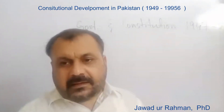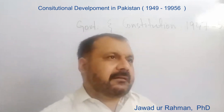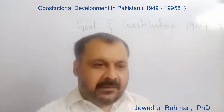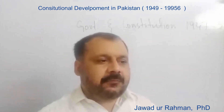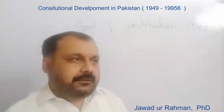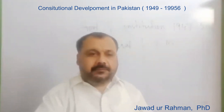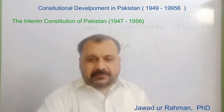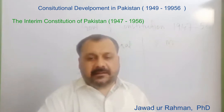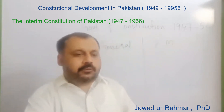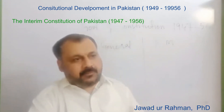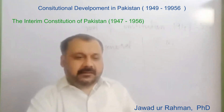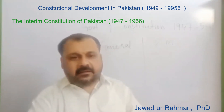Before learning about constitutional development in this era, we must know some basic facts about the government — who ruled the country and who the rulers were. Pakistan got independence under the Independence Act 1947, and under Section 8C of that act, the Government of India Act 1935 was made the interim constitution for both Pakistan and India. So the constitution of Pakistan from August 1947 till March 1956 was the Government of India Act 1935, as adopted by Pakistan.